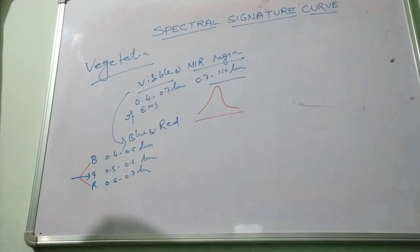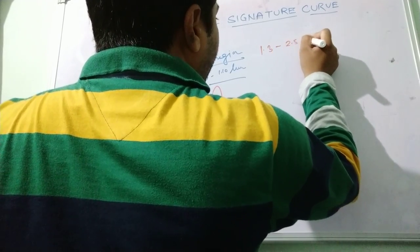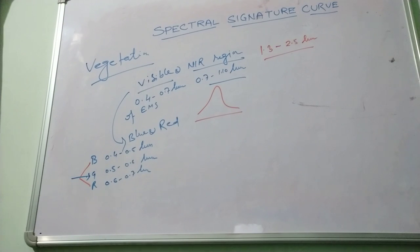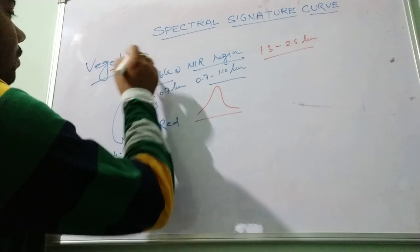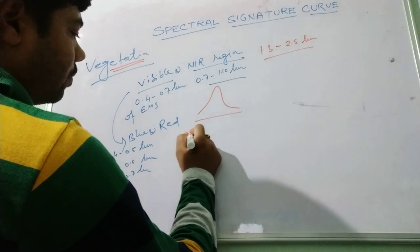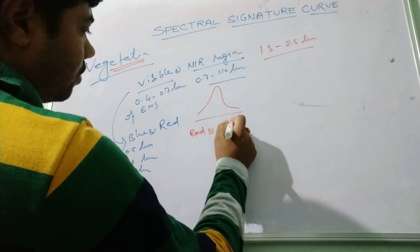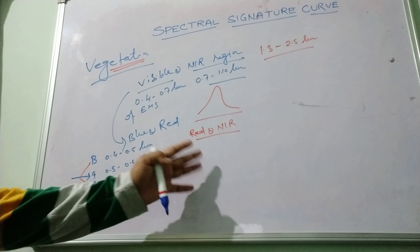If we consider the mid-infrared region, that is 1.32 to 2.5 micrometer, in this wavelength range both the reflectance and transmission normally decline from medium to low, and the absorption rises from low to high. So when characterizing vegetation, we consider the red and near-infrared regions, which help to identify the vegetation characteristics of the earth.